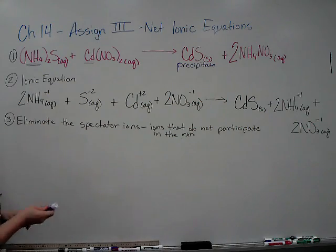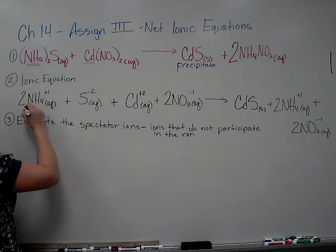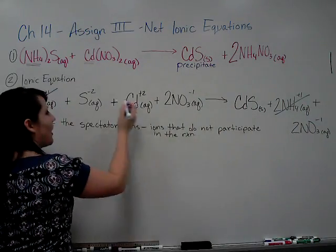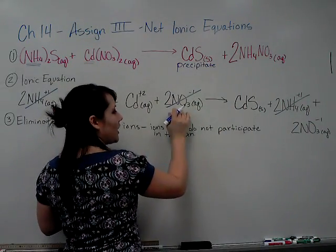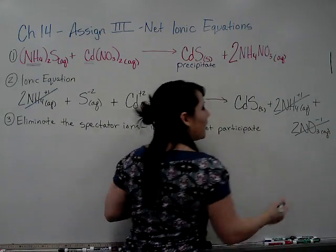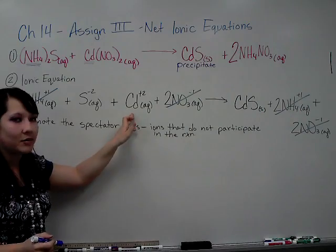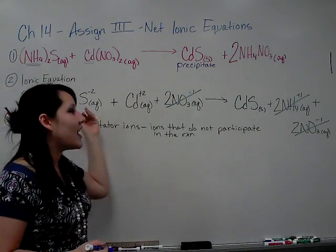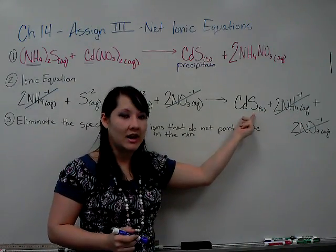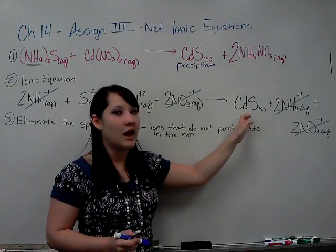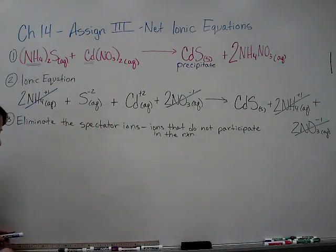And the spectator ions in this case are going to be ammonium. Because we have ammonium on the left and we have ammonium on the right. And nitrate. Here's the nitrate on the left. Here's the nitrate on the right. Notice that I did not eliminate sulfide or cadmium. Because they actually have a chemical change. They are different on the right hand side. They retain being a solid on the right hand side of the equation.